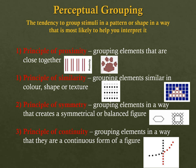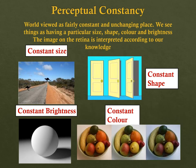The world is viewed as a fairly constant and unchanging place — this is a function of perceptual constancy. Perceptual constancy means that we see things as having a particular size, shape, color, and brightness irrespective of changing conditions. It is spontaneous and we are seldom aware of it. There are four attributes: constant size, constant shape, constant brightness, and constant color. For example, our perception of colors remains constant despite changing conditions, and a white shirt may look slightly gray in the shade but we still perceive it as white.